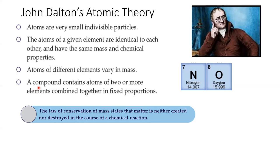Another idea in Dalton's theory is that a compound contains atoms of two or more elements combined together in fixed proportions. For example, salt is made up of a sodium atom (Na) and a chlorine atom (Cl) — one sodium atom combined to one chlorine atom — combined in fixed proportions.